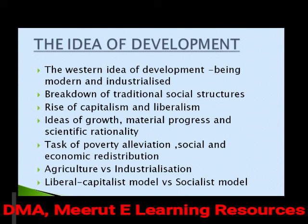This led to a rise of capitalism and liberalism in the country — a focus on growth, material progress, better GDP, along with scientific rationality. Scientific rationality was very close to Nehru's policies; he always insisted on the use of science and reason to develop the country's basic infrastructure. Besides, we also needed to address poverty alleviation, where 85% of the population were the have-nots, lacking wealth, status, education, or employment.